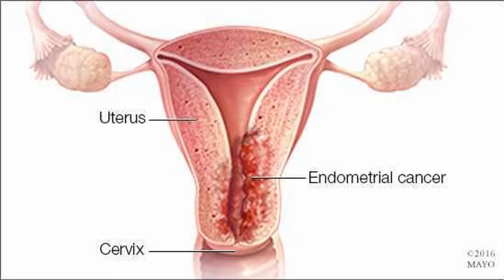About the uterus and endometrium. The uterus is a hollow organ, normally about the size and shape of a medium-sized pear. The uterus is where a fetus grows and develops when a woman is pregnant. It has two main parts. The upper part of the uterus is called the body or the corpus — corpus is the Latin word for body. The cervix is the lower end of the uterus that joins it to the vagina. When people talk about cancer of the uterus, they usually mean cancers that start in the body of the uterus, not the cervix. Cervical cancer is a separate kind of cancer.